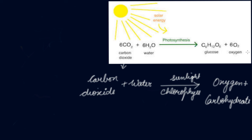The presence of starch in leaves indicates the occurrence of photosynthesis. You can check whether a leaf has starch or not by placing the leaf in iodine for some time. If it turns violet or red — if it changes color — it means that the leaf has carbohydrates or starch present in it.